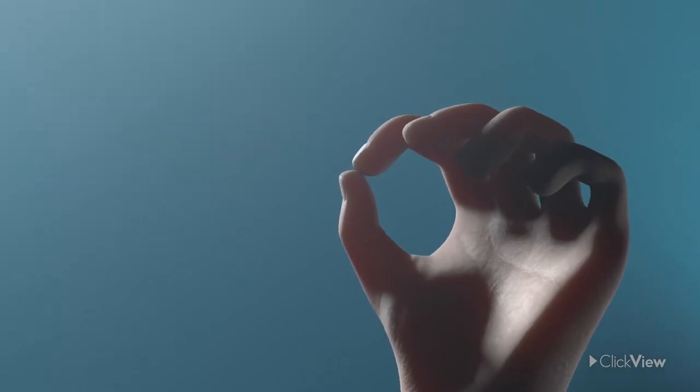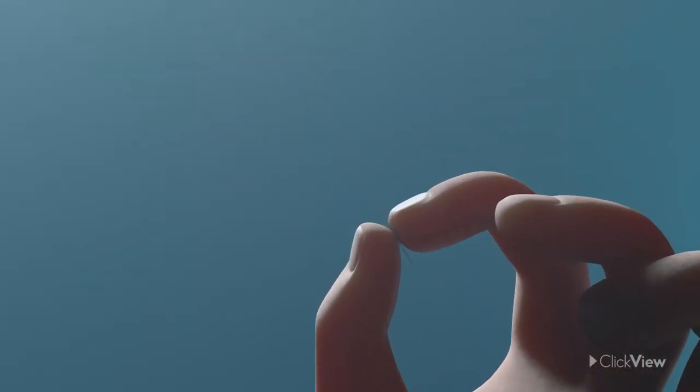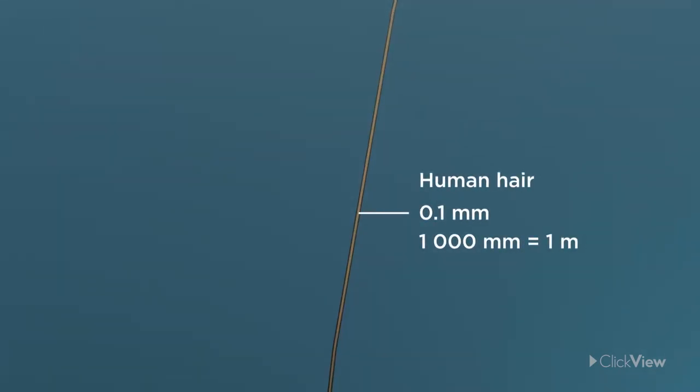The smallest objects visible to a keen human eye are a minuscule 0.1mm in size. That's around the width of a single hair.